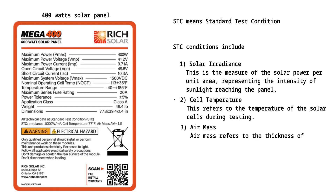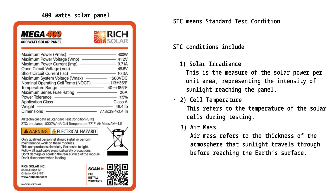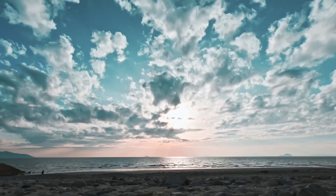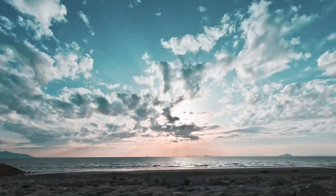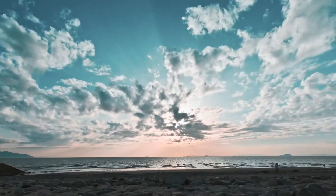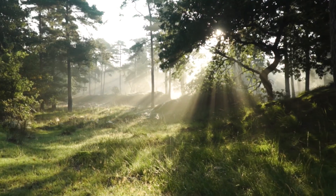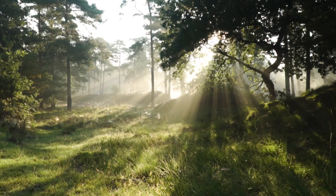3. Air mass. Air mass refers to the thickness of the atmosphere that sunlight travels through before reaching the Earth's surface. An air mass of 1.0 is when the sun is directly overhead, and AM 1.5 represents sunlight at an angle typical of mid-latitudes.